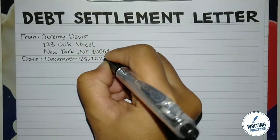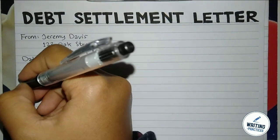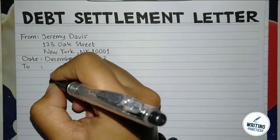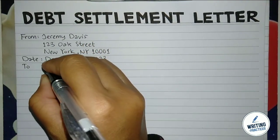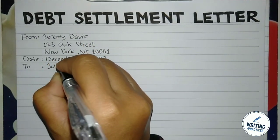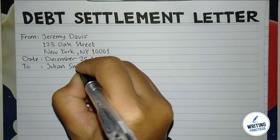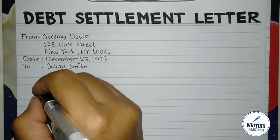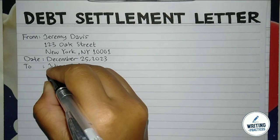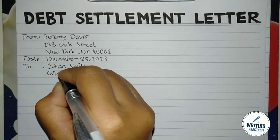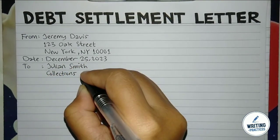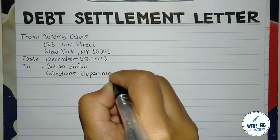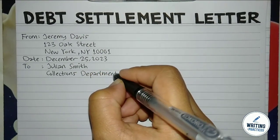Here, Writing Practices will show you how to write a debt settlement letter step by step. First of all, write your full name, then your home address, and then the date of the letter — you can use the format of month, date, and year. After that, write the information about the recipient: write the full name, or if you don't know it, you can simply write the department in the organization, and write the name of the company or organization or institution.